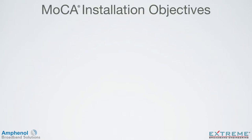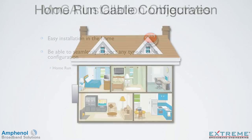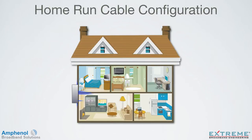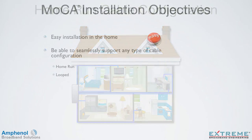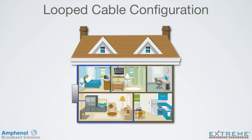When putting the MOCA standard together, there were certain installation objectives. It had to be easy to install, either by the cable technician or the homeowner. It also needed to support any type of cable configuration, such as home run — the preferred wiring configuration of most cable operators, where all cables originate at one central point, normally the demarcation point, and each outlet has a dedicated coaxial cable. The other cable configuration type is called looped, where the signal from one splitting device will feed another splitter on some or all of the outlets. This is found in some multiple dwelling units or homes that are wired by the homeowners.